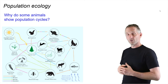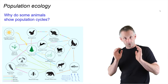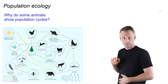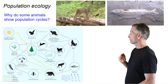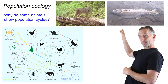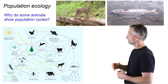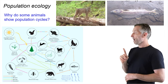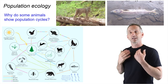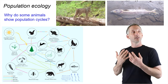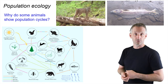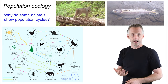Now let's zoom back in on population ecology and look at two different components of this food web from our cabin: lynx and pink salmon. I want to ask why some animals, such as these, show population cycles. This is a classic, important question in population ecology that ecologists have struggled with for decades.